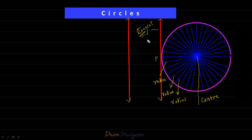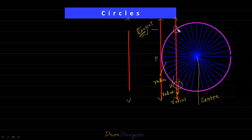Now see another situation. This line intersects the circle at two points, so there are two common and distinct points between the line and the circle. Such a line is called a secant. A secant of a circle intersects the circle in two distinct points.